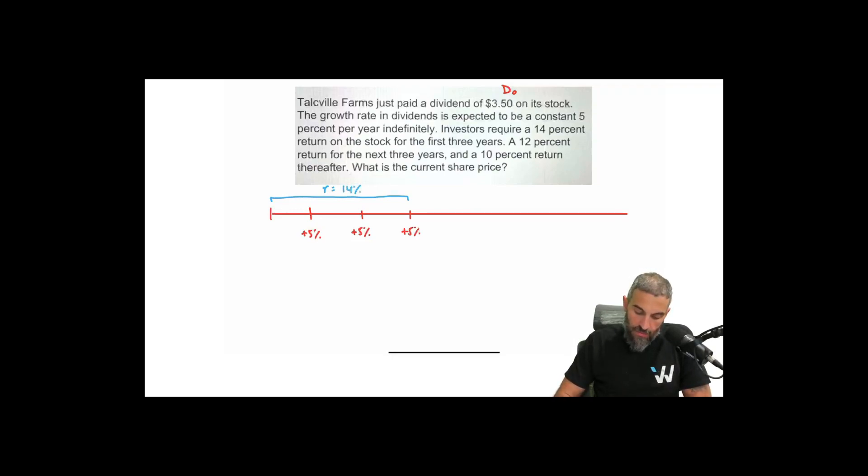After that, for the next three years, remember the dividend is still growing at 5% per year indefinitely. So for the next three years, the return, the required return is 12%. And then after that, it remains perpetual, we're perpetually at 10%.